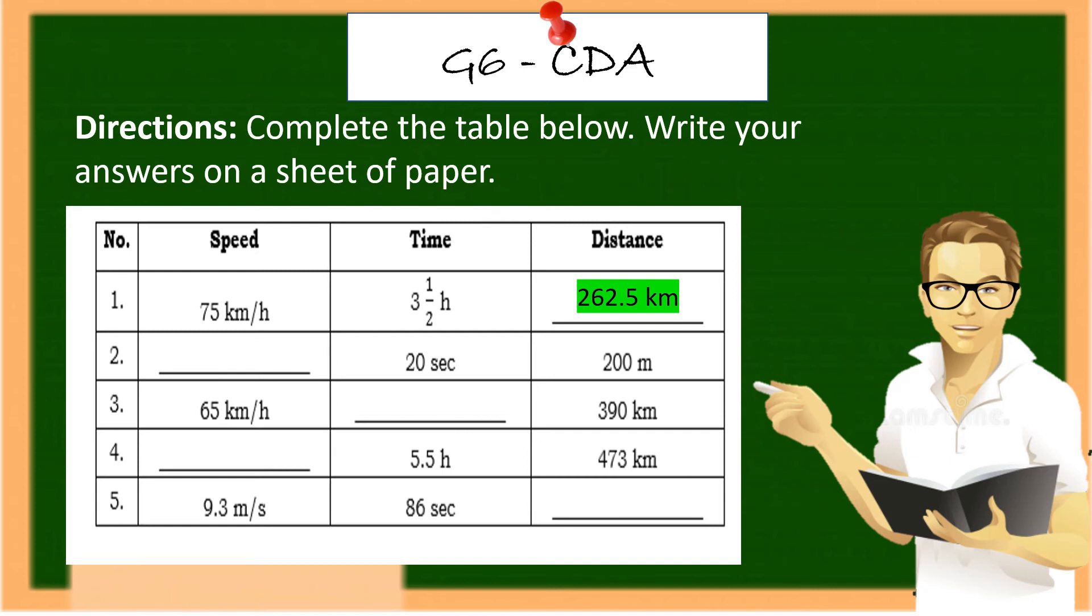Number 2. The given are 20 seconds, 200 meters, and the speed is 10 meter per second. Correct. Number 3. The given are 65 kilometers per hour in speed, and the distance is 390 kilometers. The answer? 6 hours.